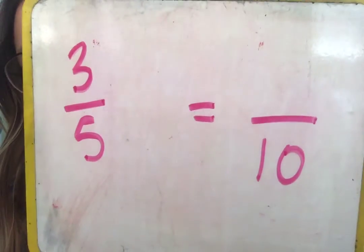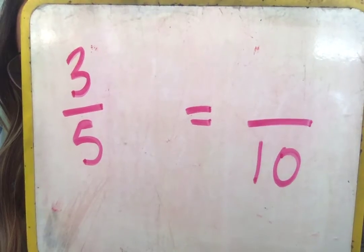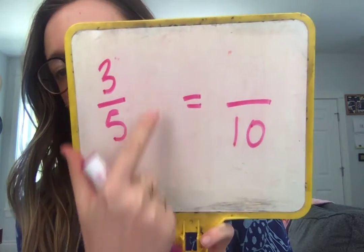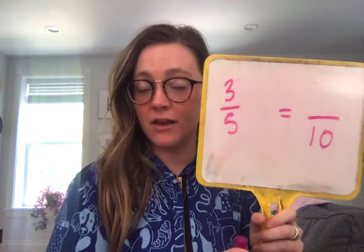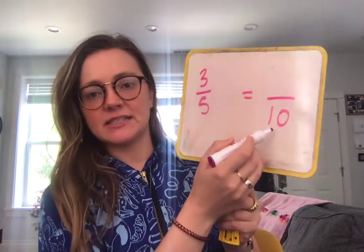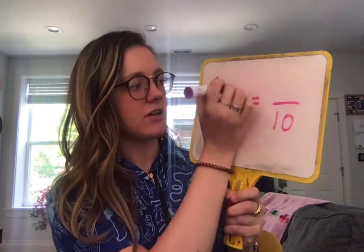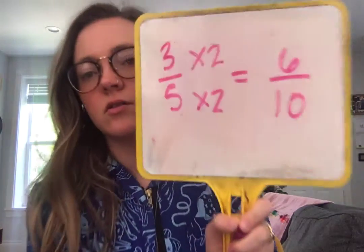Let's try another one — I want you to try this one on your own. Pause your screen and try it. What do I need to multiply to get the equivalent fraction? Whatever you do to the denominator, you have to do to the numerator. What do I multiply five by to get ten? Five times two. If I do five times two on the bottom, I have to do five times two on the top — which gives me six.